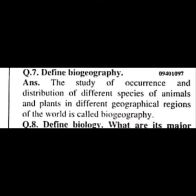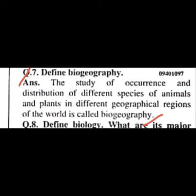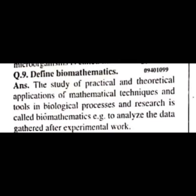Let's start. Question number seven: define biogeography. So when you have to write this answer, first you write 'biogeography,' then you write the definition to the right of it. The definition covers the distribution of different species of plants and animals.